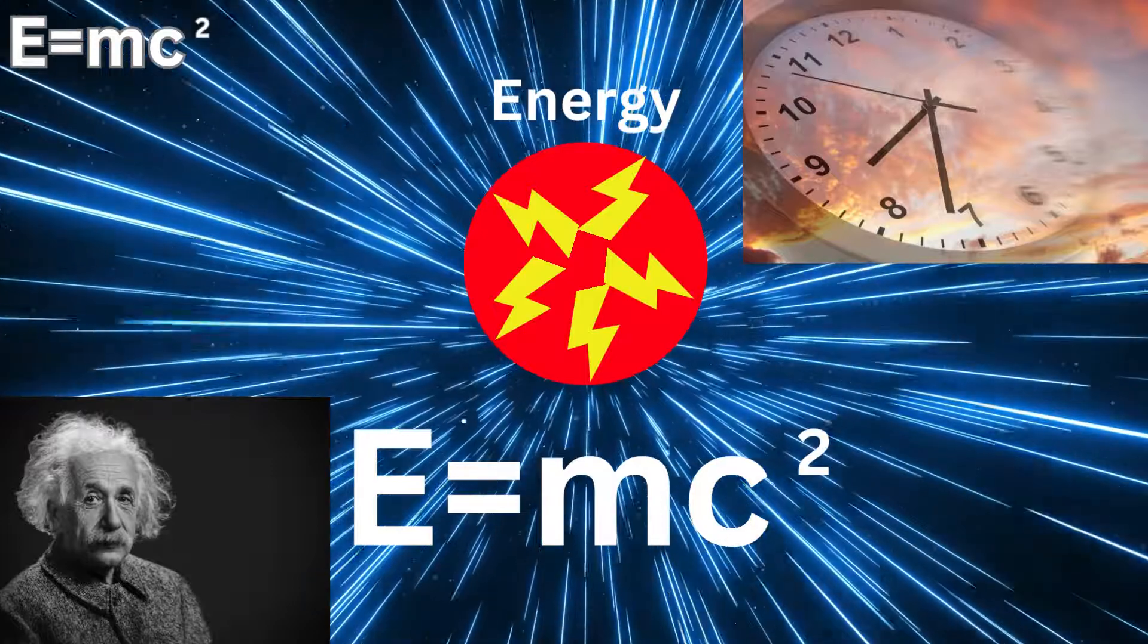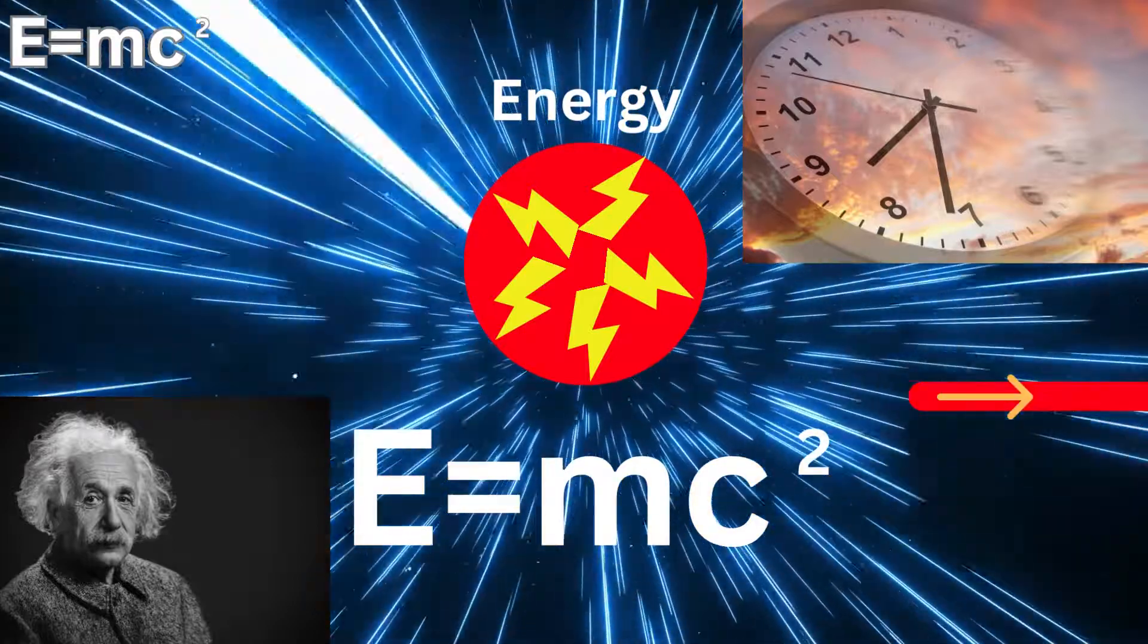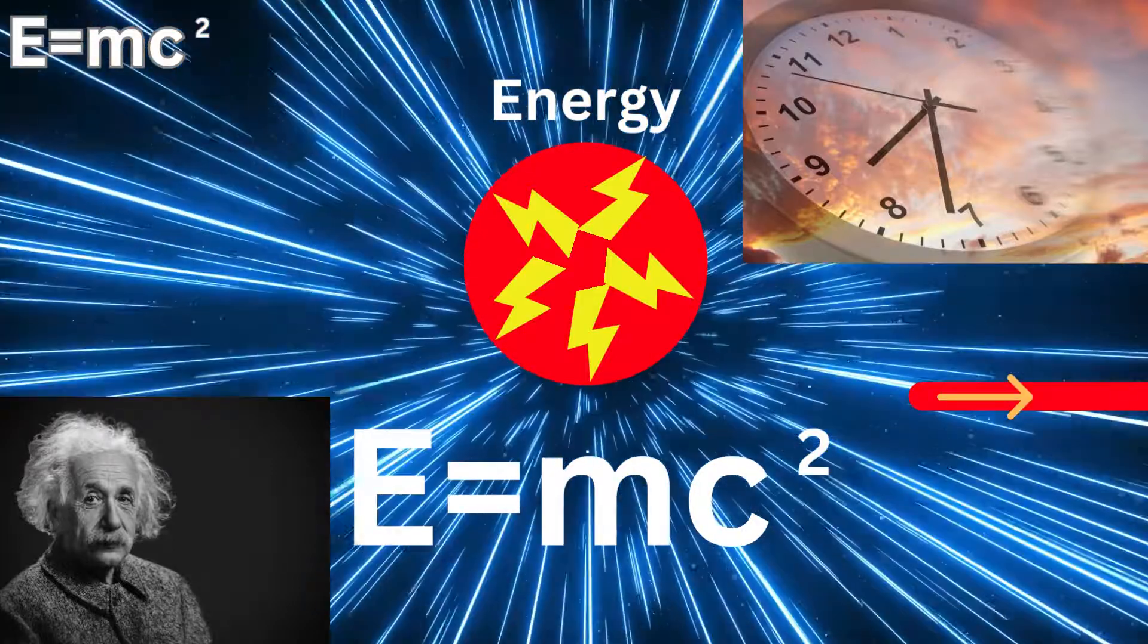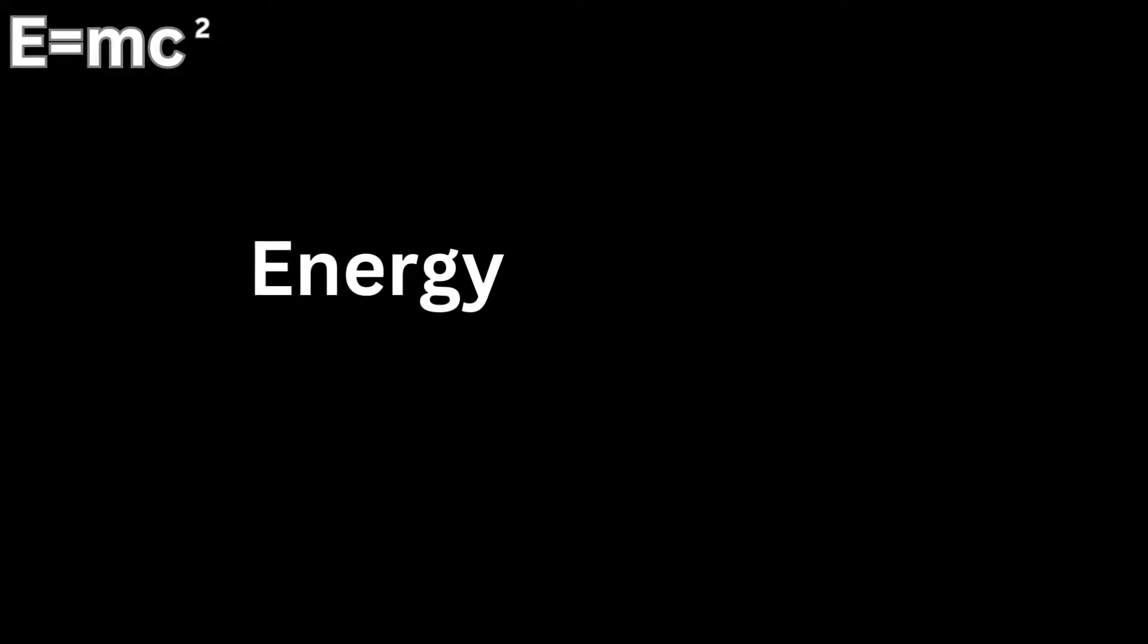Time dilation and length contraction are examples of relativistic effects that result from an object's energy and mass increasing as it accelerates.